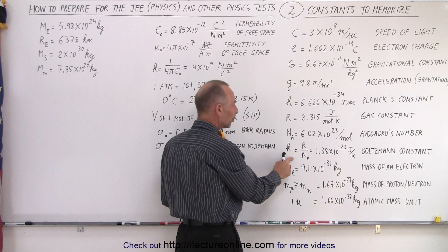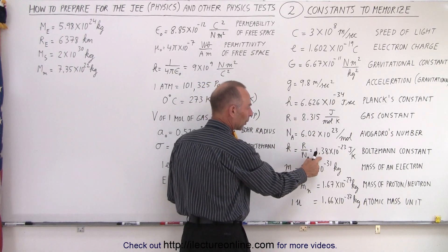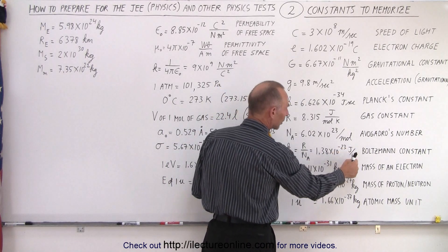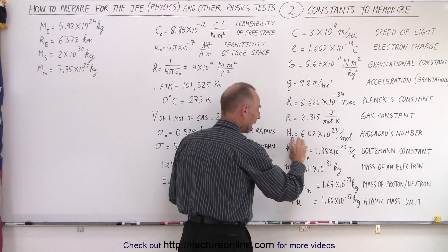And then if you convert that to the Boltzmann constant, we take the gas constant, divided by Avogadro's number. We get 1.38 times 10 to the minus 23 joules per Kelvin. Notice there's no mole in there, because this is per mole, this is per atom or molecule.